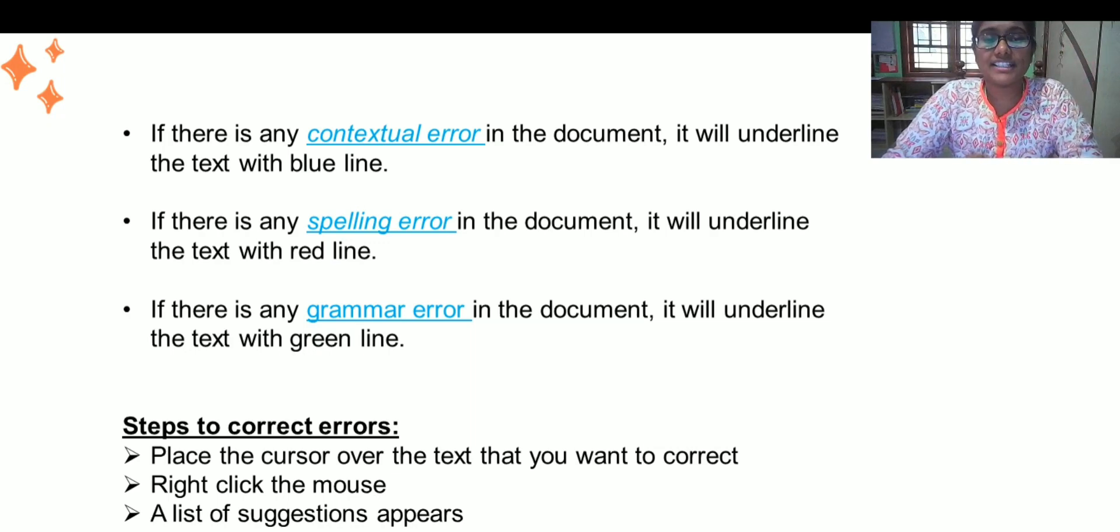What are these? Let us study one by one. Contextual error is always in blue color, I mean the underline of the text is in blue color, while the spelling error comes with the underline of red color. Grammar error comes with the underline of green color.